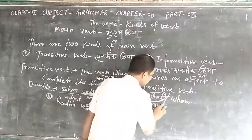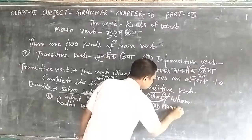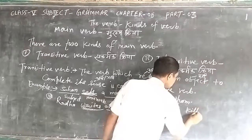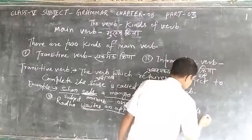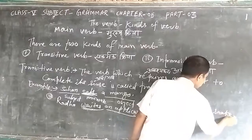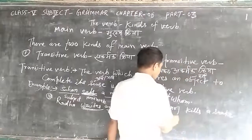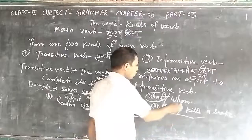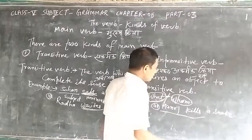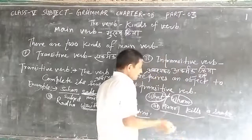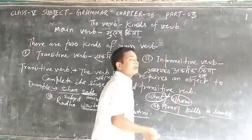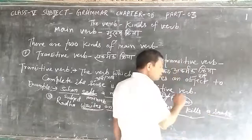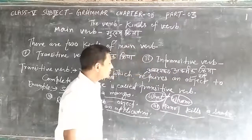Third example: 'Manoj kills a snake.' If we ask 'Manoj kills whom?', the answer is 'a snake.' The verb 'kill' requires an object to complete its sense. So, the verb 'kill' is a transitive verb.